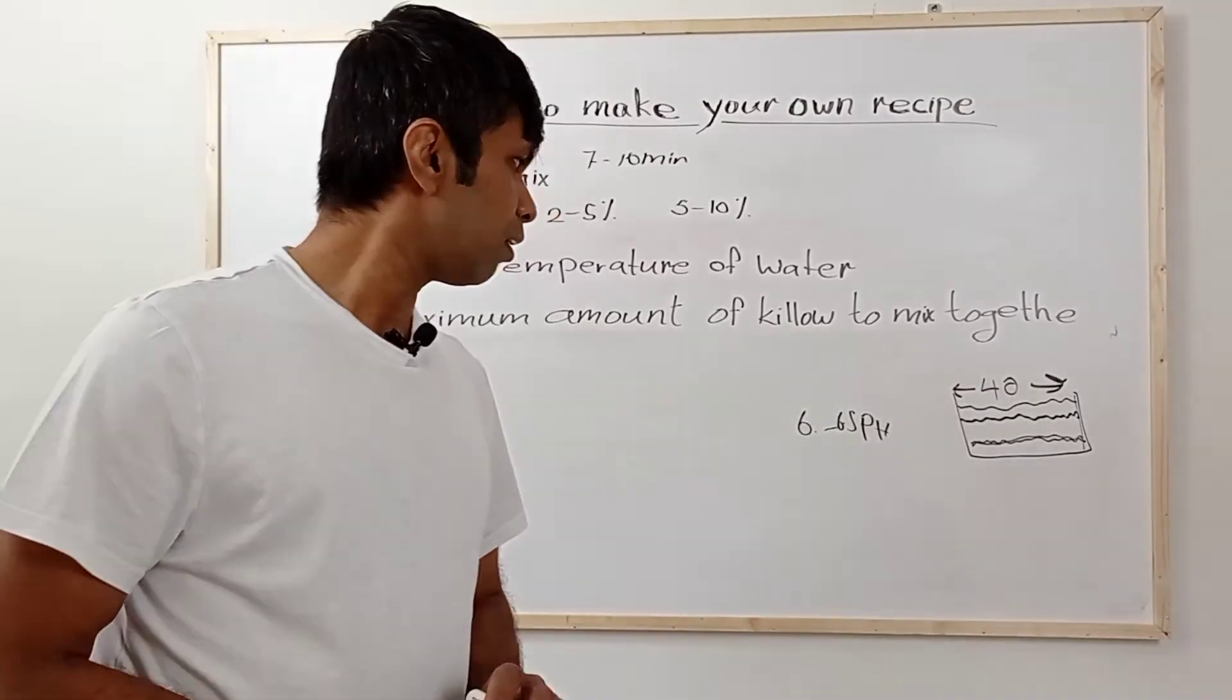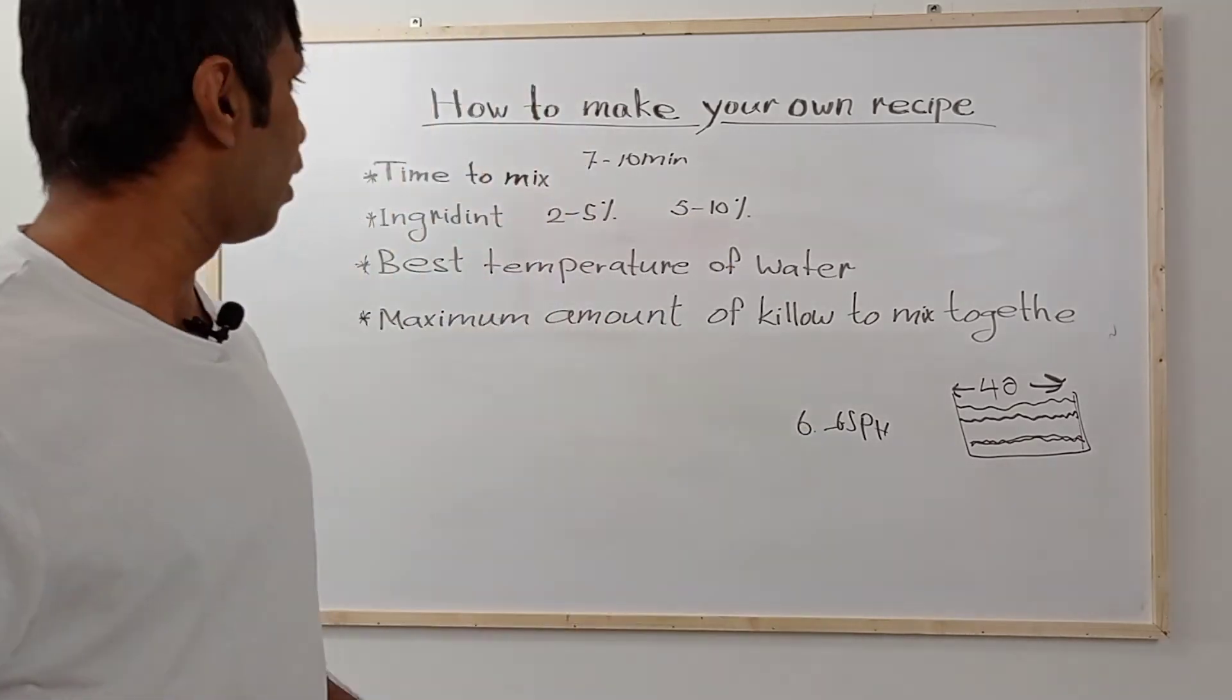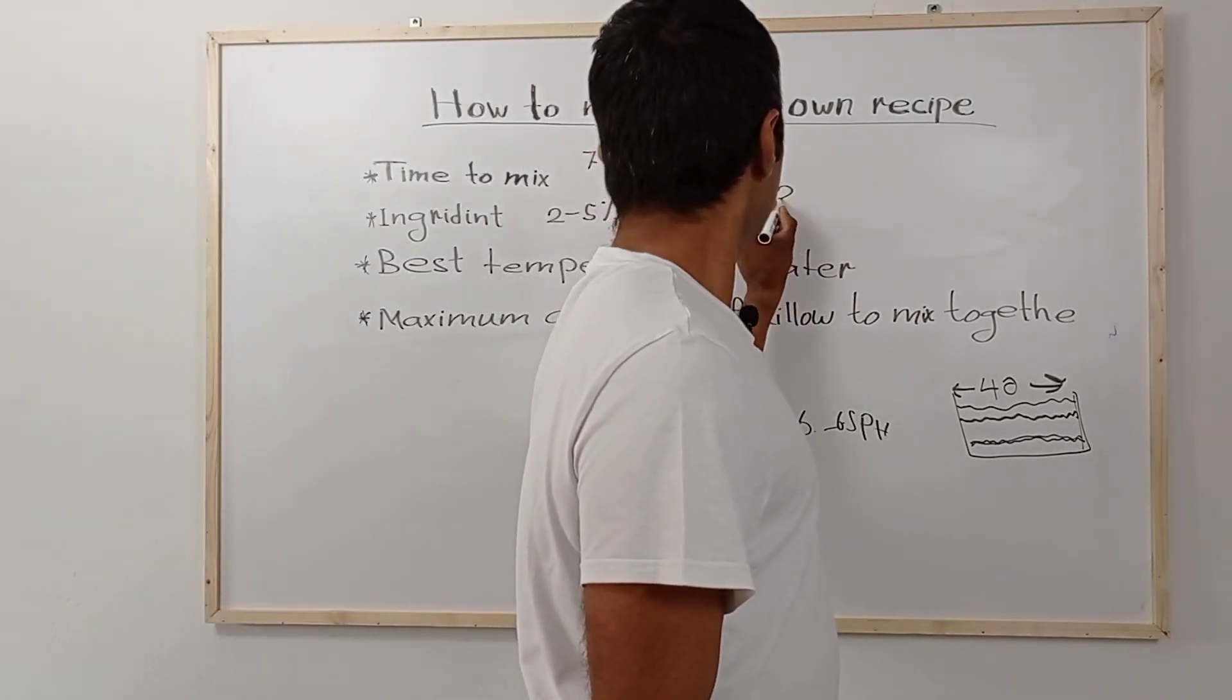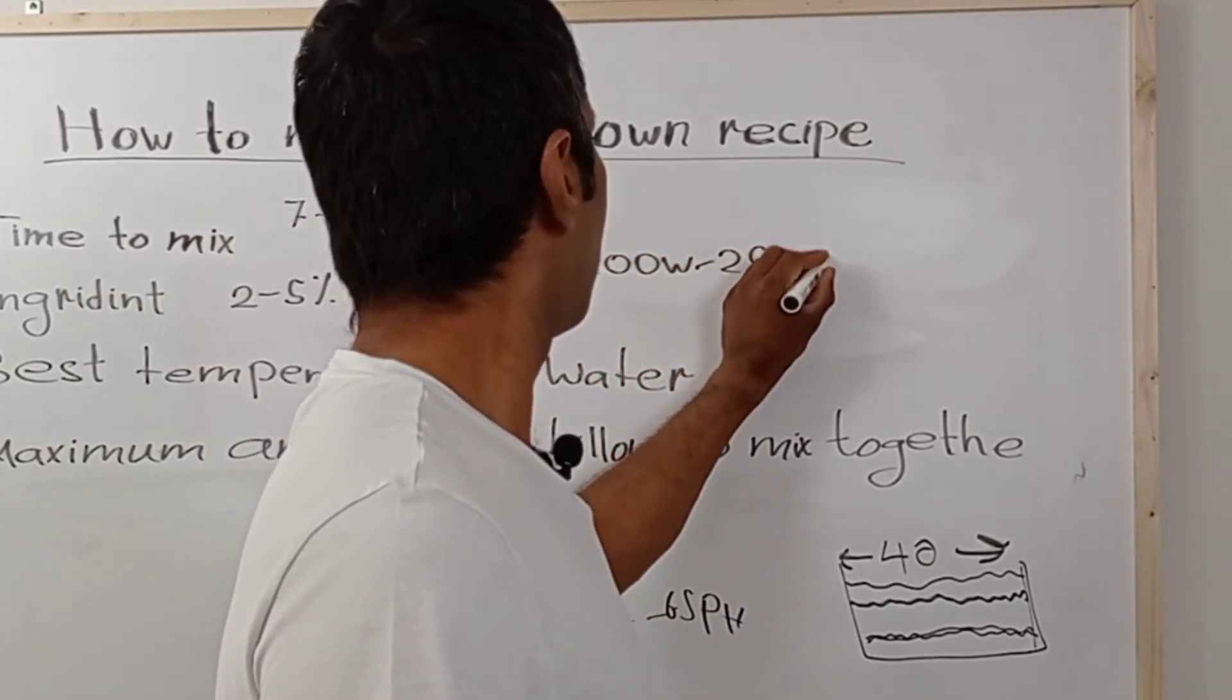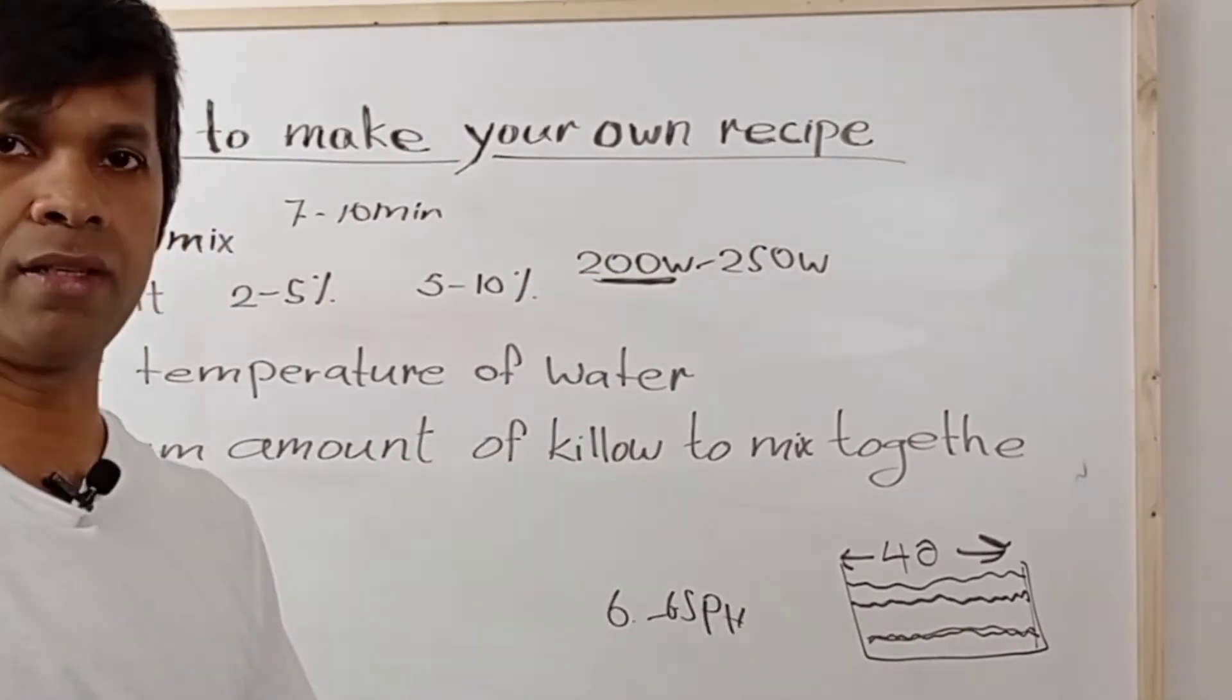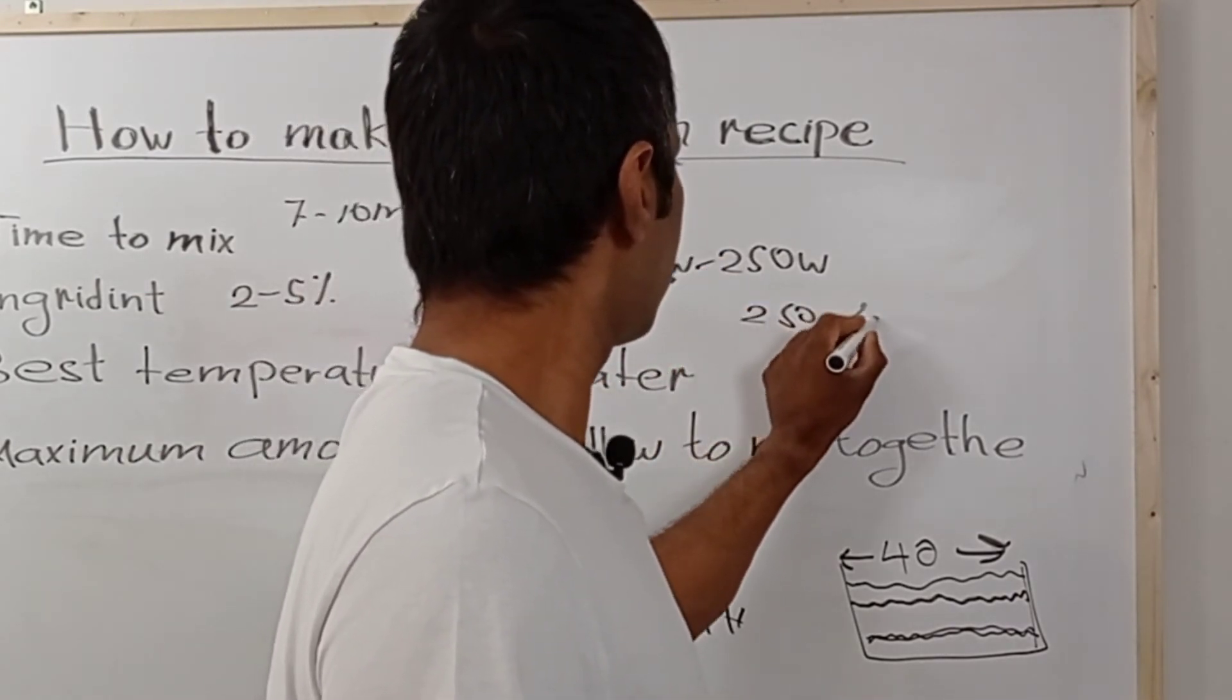As I already explained in my second video, when you're making a recipe for pizza, now you can decide the time to mix and the ingredients. I forgot to tell here: the W number for pizza, better 200 to maximum 250 W number if you're working in room temperature with pizza dough. If you're making a recipe for bread, you can use 250 to 400 W number.